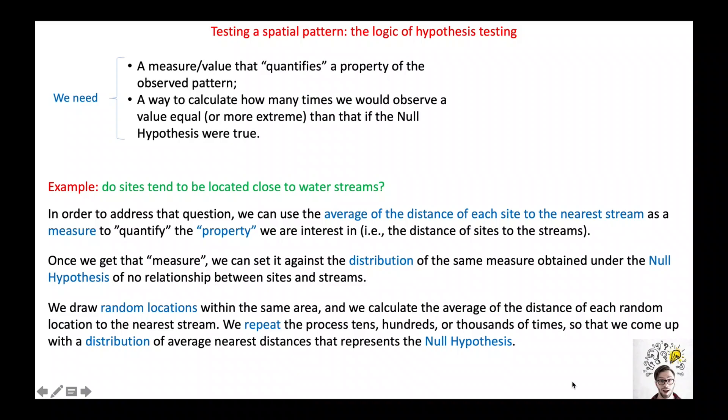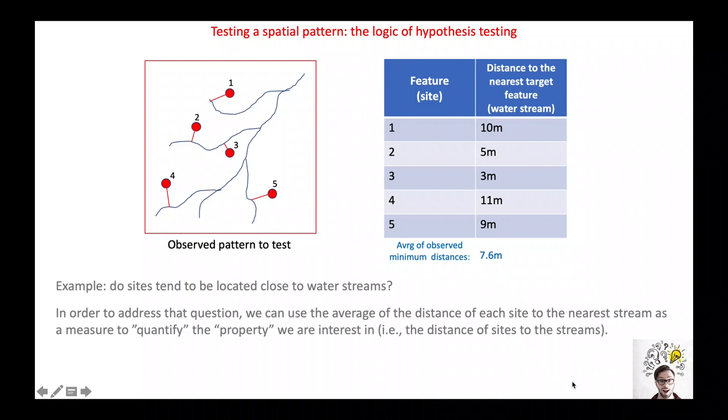Once we arrive at that measure, we may want to work out the distribution of the same measure generated under the null hypothesis of no association between sites and streams. In this slide, you can see a fictional group of five sites representing our observed pattern. The table to the right lists the distance of each site to the nearest water stream, as well as the average of those five distances. The average of the observed minimum distances distills down into a single measure the spatial relationship between sites and streams.